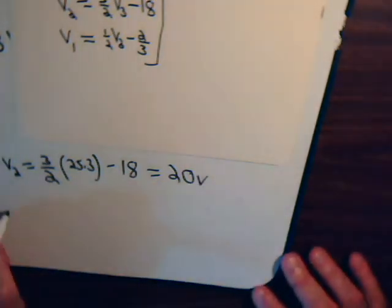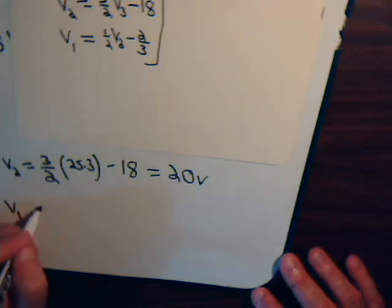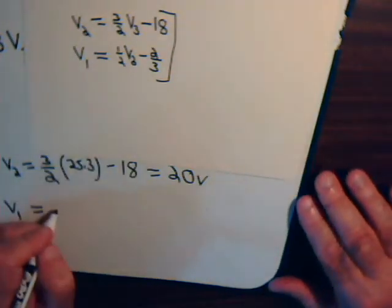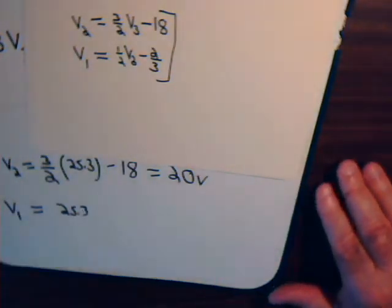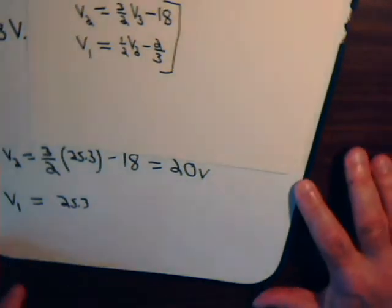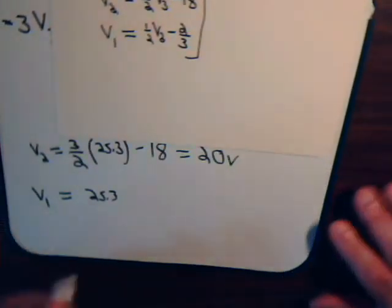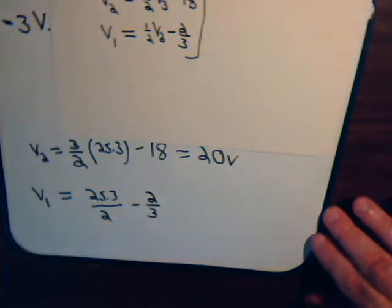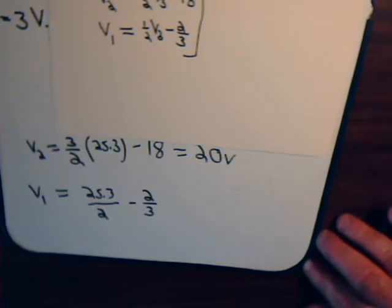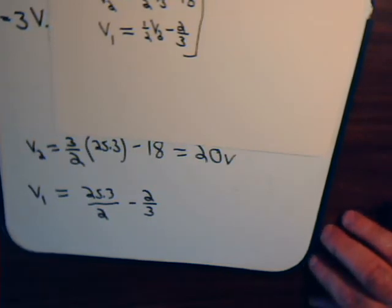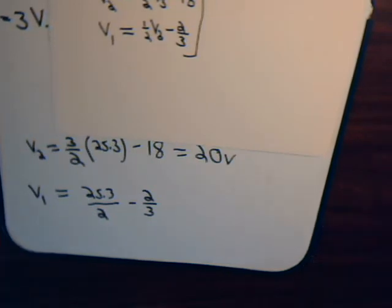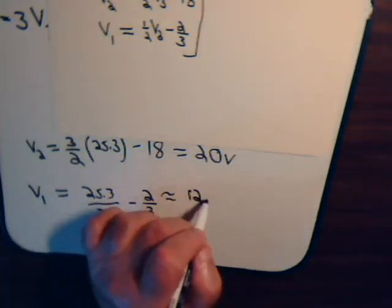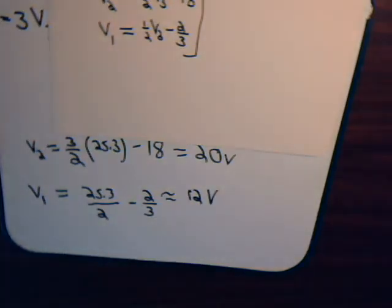And for V1, that's one half V3. So that's 25.3 divided by 2, keep things in better focus here, minus 2 thirds. And going to the calculator, and then minus .667, that's very close to being 12.